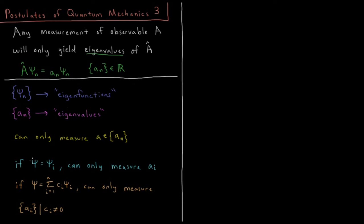If our wave function equals some specific eigenfunction of this operator, then the only value we can measure for that property is the eigenvalue of this individual eigenfunction. We can't measure any other values.